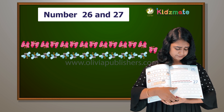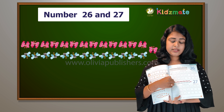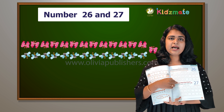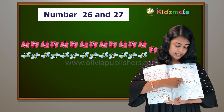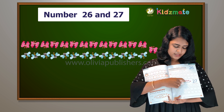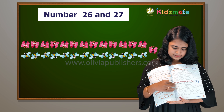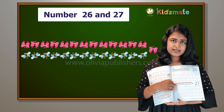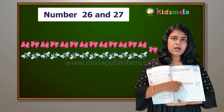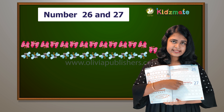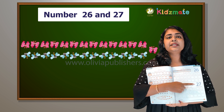Yeah, 27. Shall we start counting? Shall we start? Yes. 1, 2, 3, 4, 5, 6, 7, 8, 9, 10, 11, 12, 13, 14, 15, 16, 17, 18, 19, 20, 21, 22, 23, 24, 25, 26, and 27.